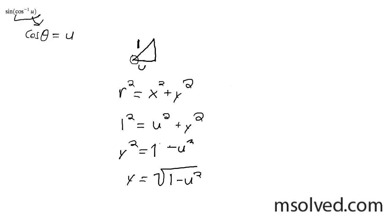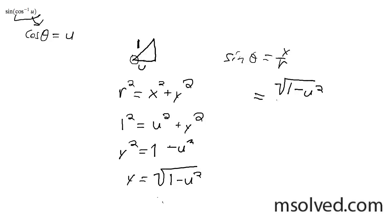And the sine is y over r. In this case, that's simply going to be y — the representation of that is the square root of 1 minus u squared, all over 1 — or simply the square root of 1 minus u squared.